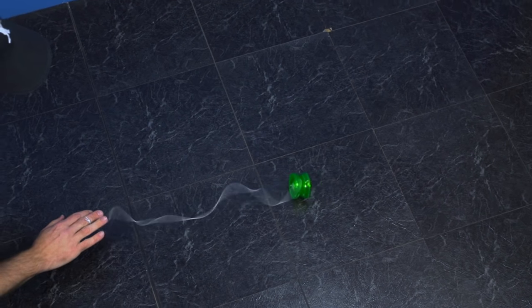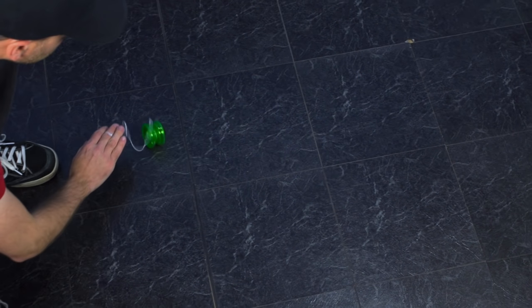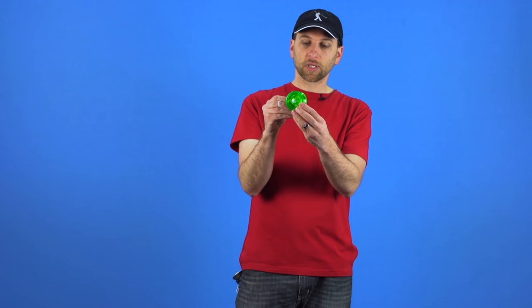As you can see with that trick, when the yoyo gets to the end of the string and it comes back, the string starts to spiral around the side of the yoyo. The reason that that happens is when you walk the dog around the park, the yoyo naturally changes its orientation.